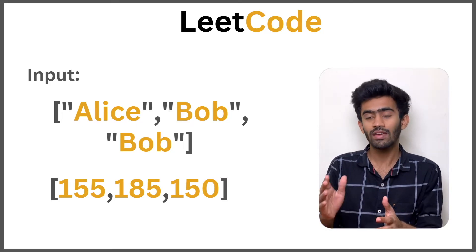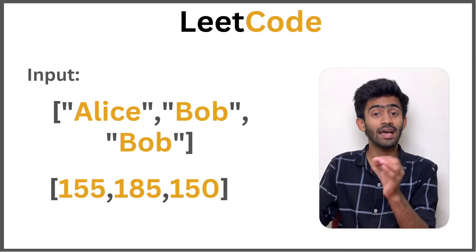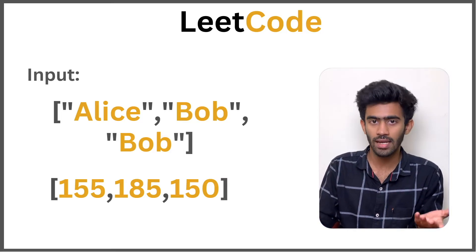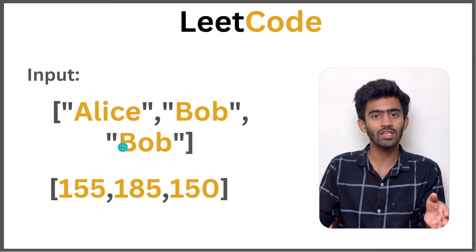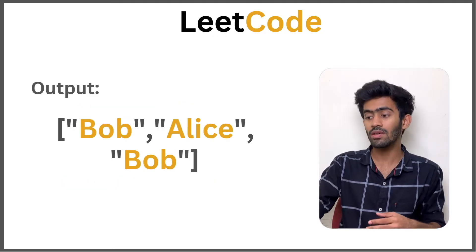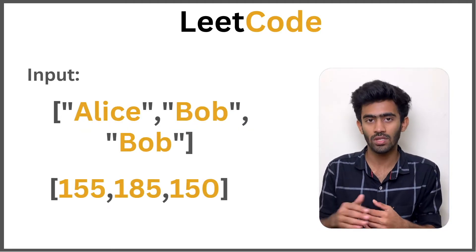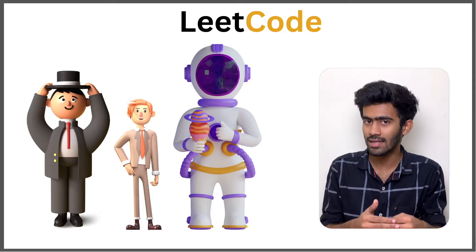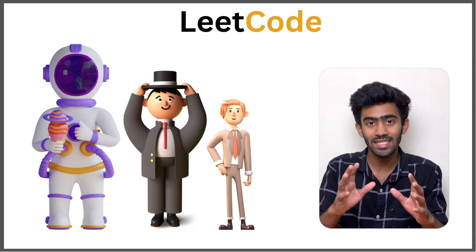With this information, we have to sort these people based on their height in descending order — the person with the maximum height should come first. So Bob with height 185 comes first, then Alice with 155, then the second Bob with 150. Our output for this sample is Bob, Alice, Bob, and we return their names.